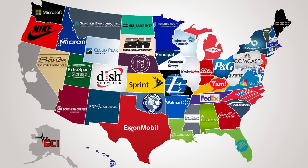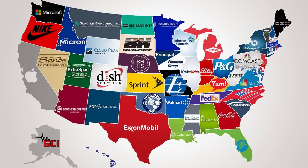On a similar note, MarketWatch makes a map that shows the largest company by market cap with its headquarters in a certain state. This is pretty interesting to look at as well, as there are plenty of recognizable companies such as Apple in California, Walmart in Arkansas, ExxonMobil in Texas, Coca-Cola in Georgia, Nike in Oregon, and so on.